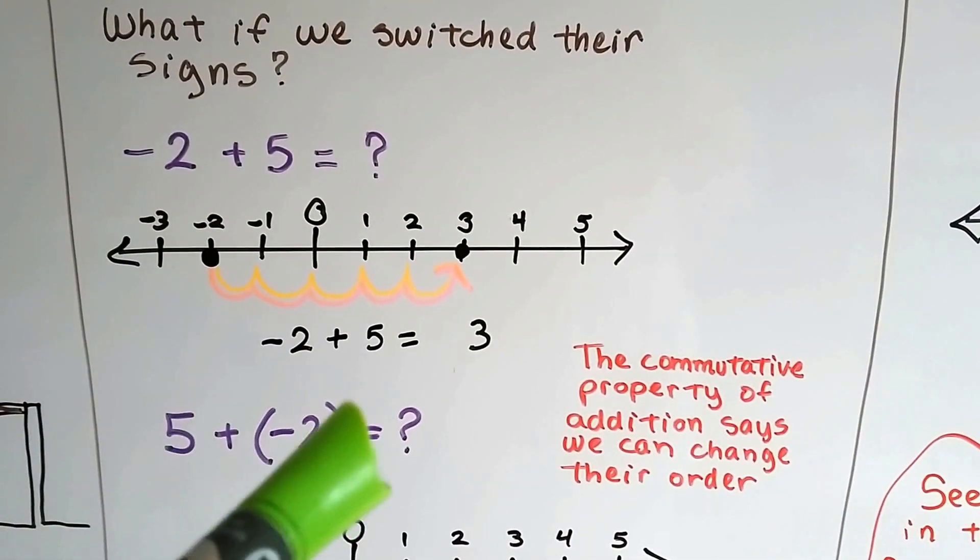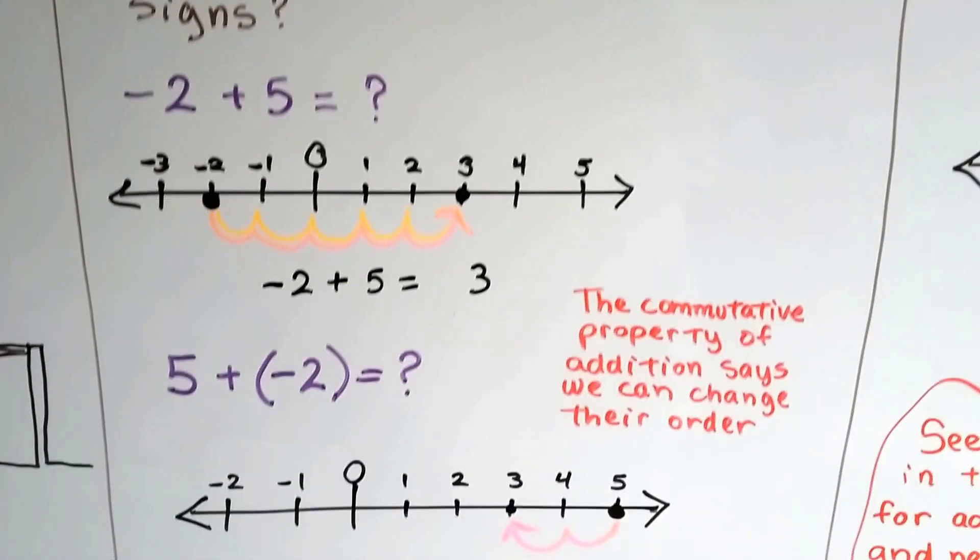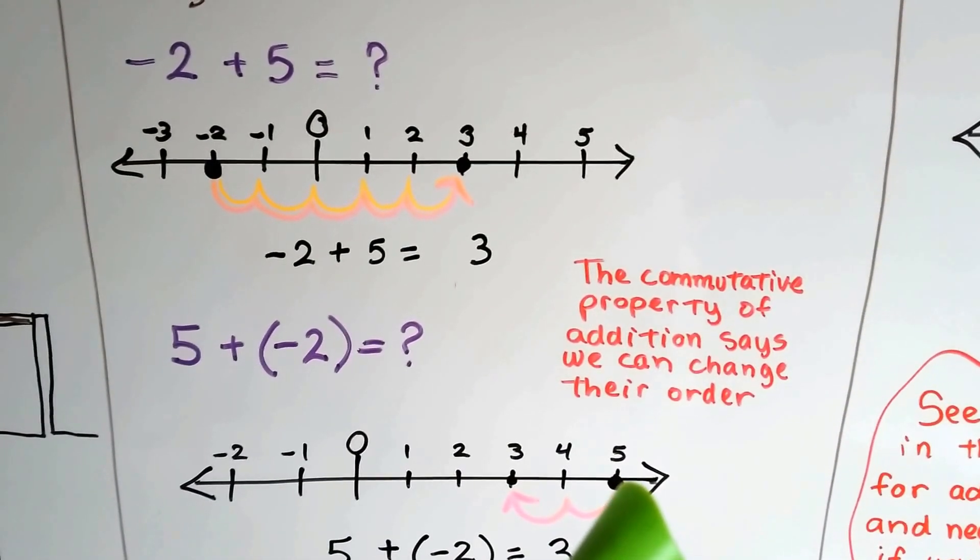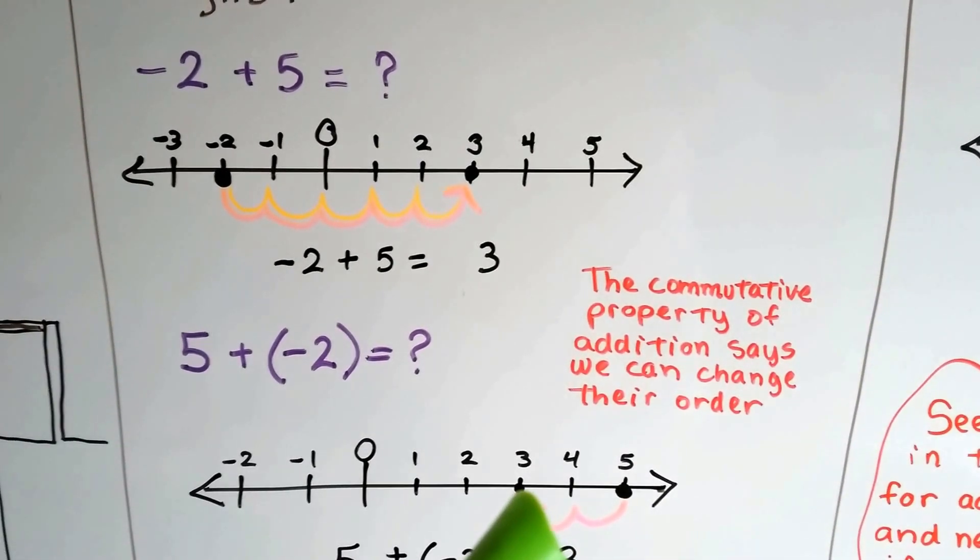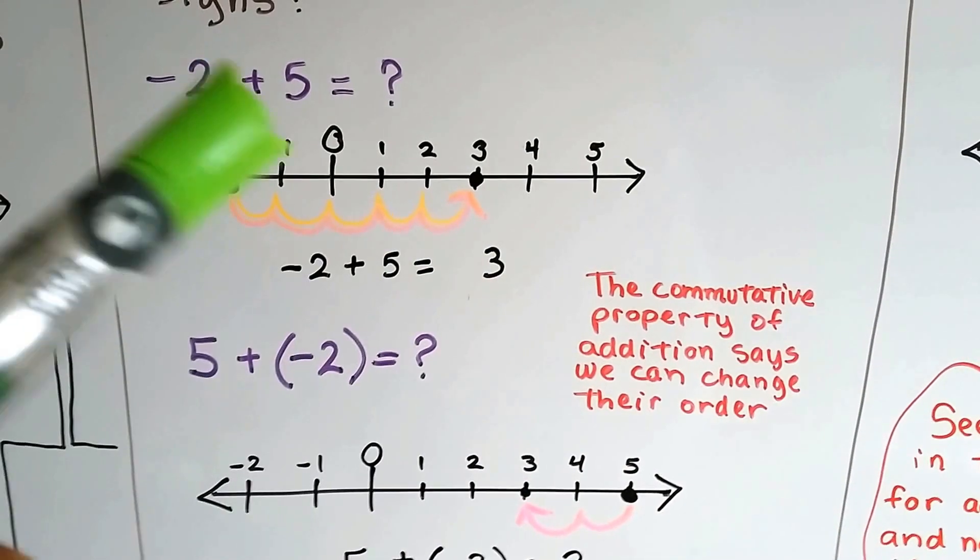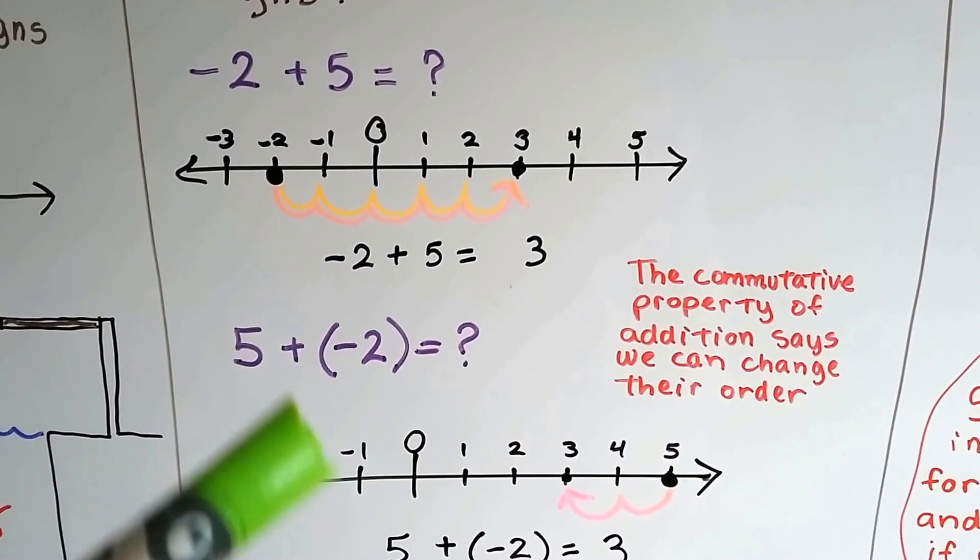And if we switch places with them and have the positive 5 on this side and the negative 2 on this side, then we're at the 5, and we're going to add negative 2, so we're going to go back towards the negative. 1, 2. We're at 3 again. So either way, we're going to get the 3 because the commutative property of addition says we can change their order.